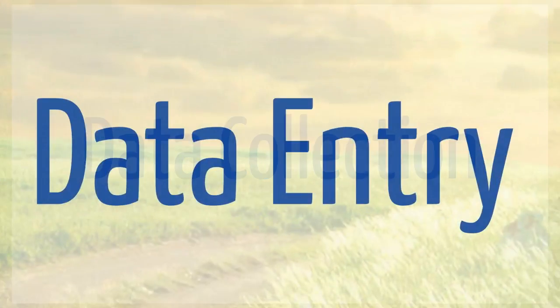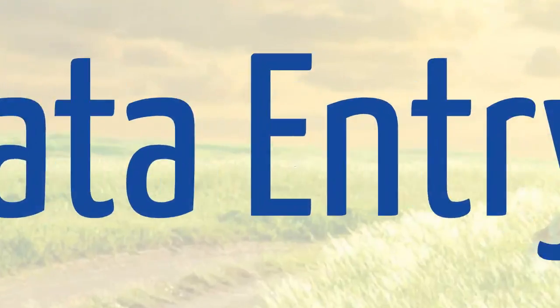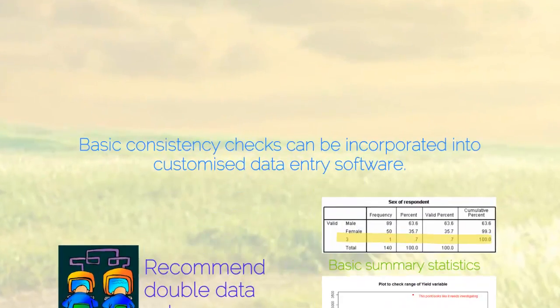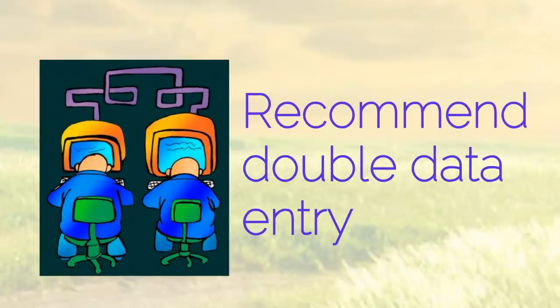If using a customised data entry system, a number of basic consistency checks can be incorporated into the data entry software to reduce mistakes occurring during data entry. We generally recommend double data entry — two individuals separately entering the data. The two sets of data can then be compared and any inconsistencies can be identified and updated.